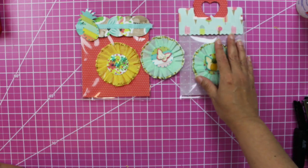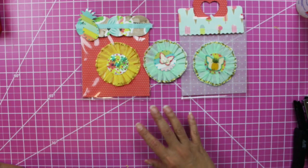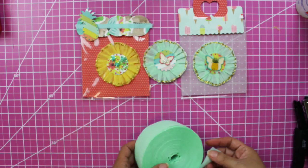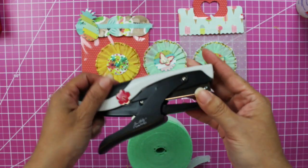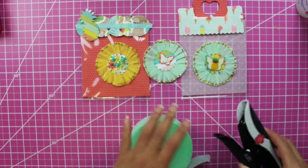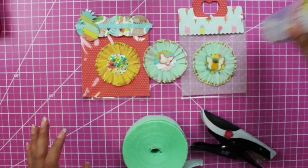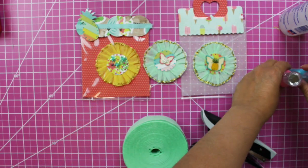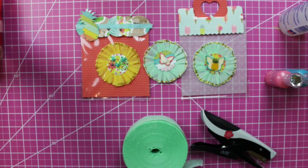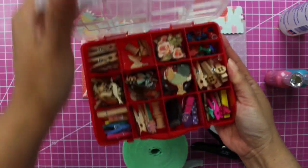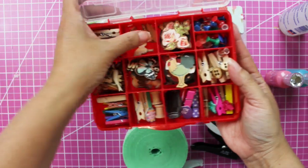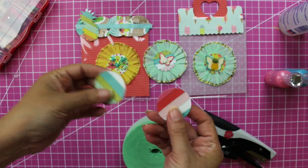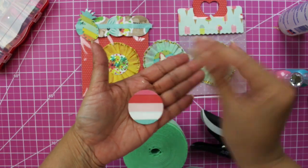These crepe paper rosettes measure three inches, and for that we will need of course crepe paper, the most important tool, the mini attacher, fabric tag, some nouveau drops, stickles, and some wooden chips.